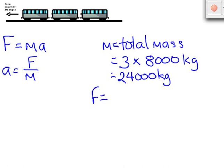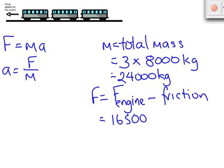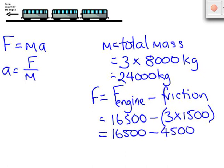Now the unbalanced force acting on these carriages is going to be equal to the pulling force provided by the engine minus the frictional forces acting on the three carriages. We know that the engine exerts a force of 16,500 newtons, and each of the three carriages experiences 1,500 newtons of resistive force. So our unbalanced force is 16,500 minus 4,500, giving an unbalanced force of 12,000 newtons.